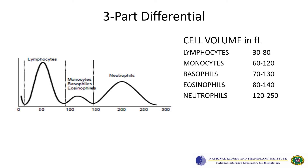A histogram generated in a three-part differential shows the smallest cells — lymphocytes — on the left, with monocytes, basophils, and eosinophils in the middle sharing a single region or peak, and the largest cells — neutrophils — on the far right. One weakness of this method is that it cannot differentiate monocytes, eosinophils, and basophils. While this information may be sufficient for some laboratories, leukocyte abnormalities could be overlooked without peripheral blood smear examination.